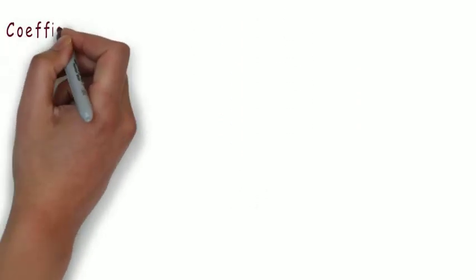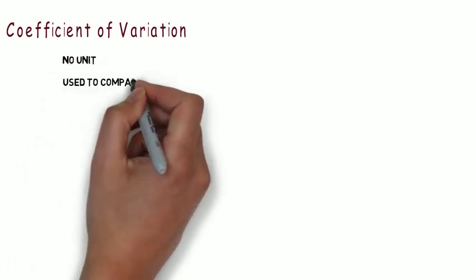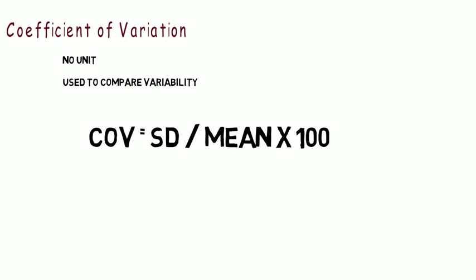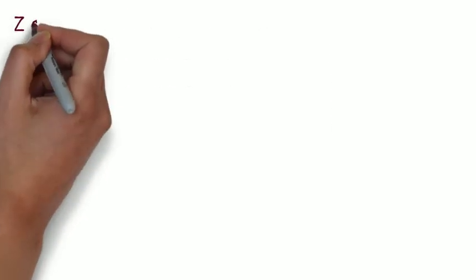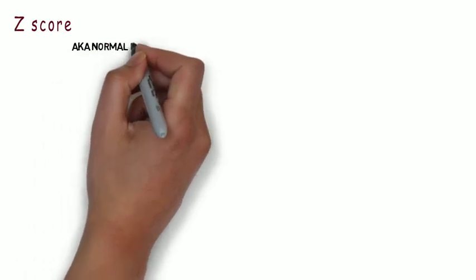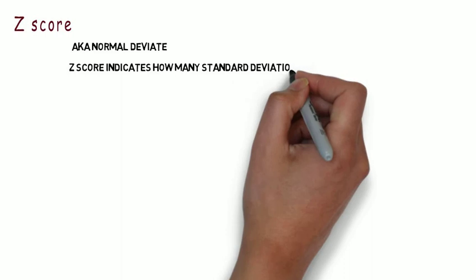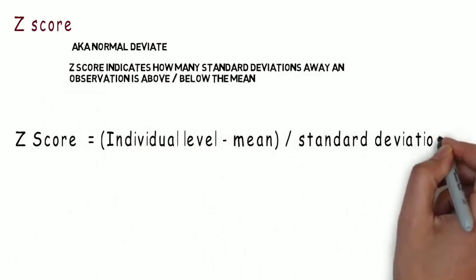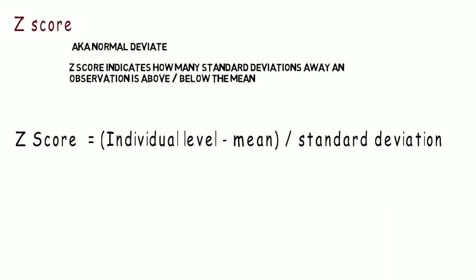Next is the coefficient of variation. It does not have any unit and is used to compare the dispersion of one variable with another. It is given by the formula: coefficient of variation equals standard deviation divided by mean, multiplied by 100. Finally, there is the z-score, also called the normal deviate. It indicates how many standard deviations away a particular observation is from the mean, given by the formula: z equals individual value minus mean, divided by standard deviation.